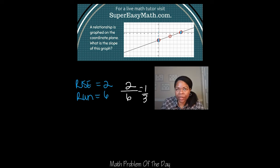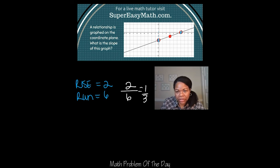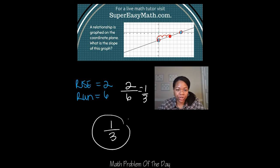And I can see that it would be 1 over 3 as well if I were to connect to that center point, which was a little bit more challenging to note because it didn't land on one of the axes. But if I started counting from there, I would go up 1 and then over 3. The answer to today's math problem of the day is 1 third.